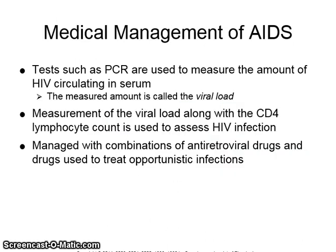PCR tests are used to measure the amount of HIV circulating in serum. The measured amount is called the viral load. Measurement of the viral load along with the CD4 lymphocyte count is used to assess HIV infection.